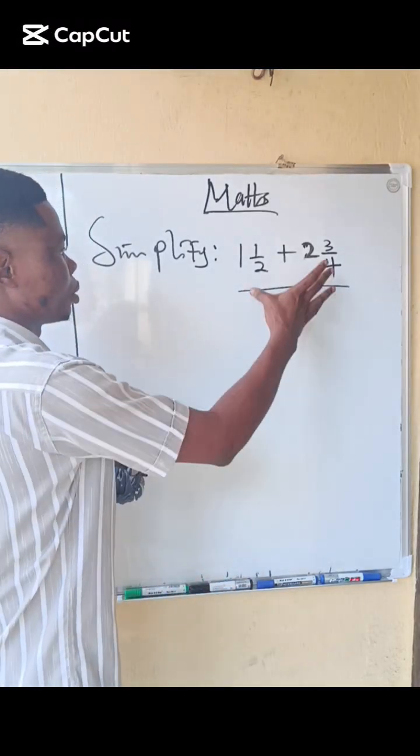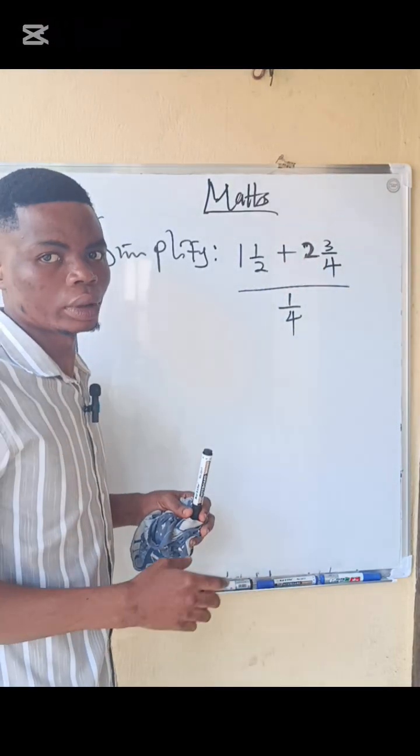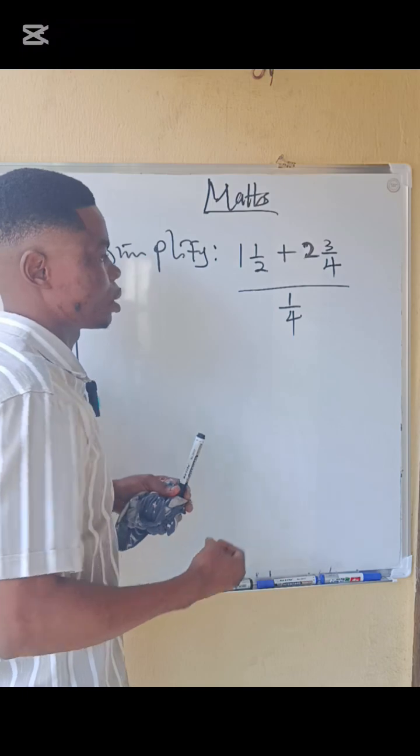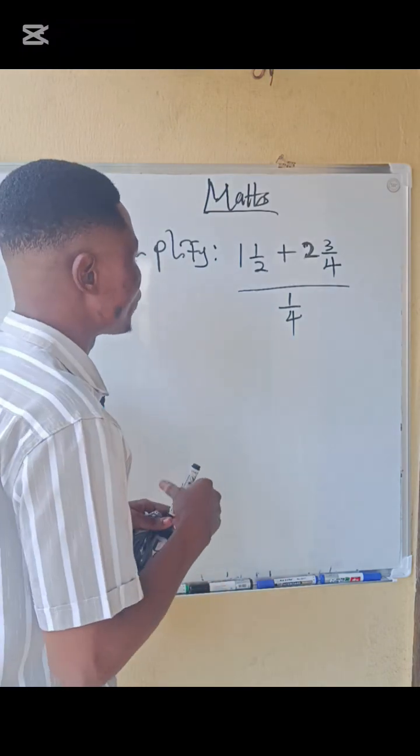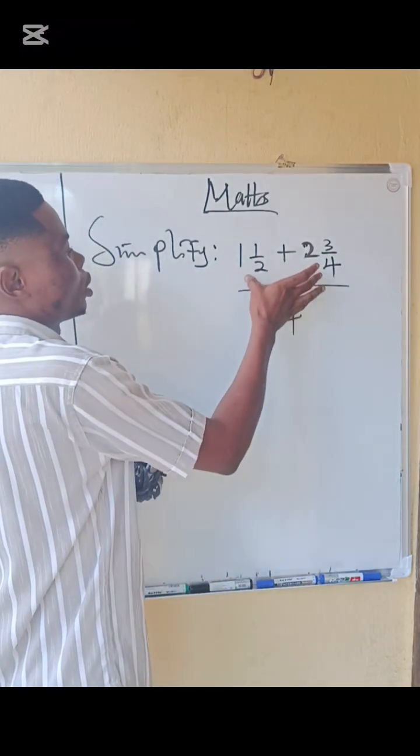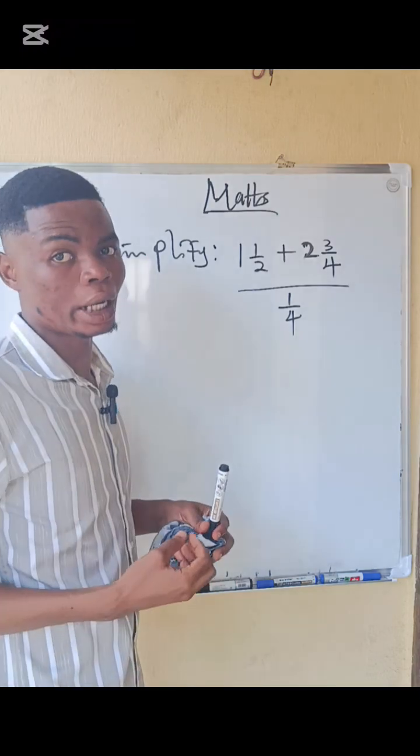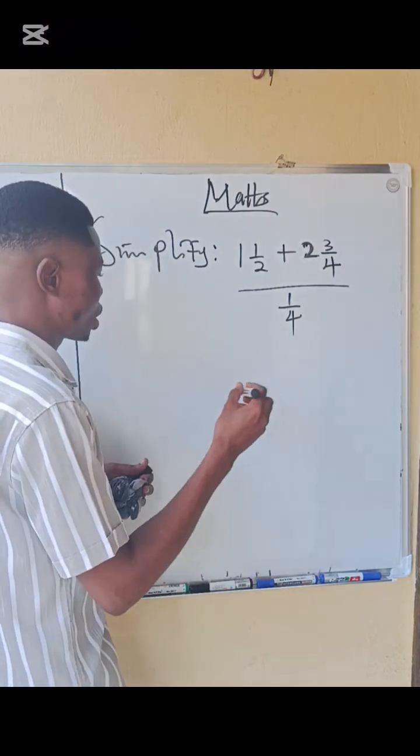Let me show you how to simplify this fraction that we have here. The first thing you have to do is change this mixed fraction to improper fraction. So this is what is going to happen.